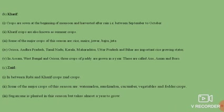Kharif crops are sown at the beginning of the monsoon and harvested after rain, that is between September to October. Kharif crops are also known as summer crops. Some of the major crops of this season are rice, maize, juar, bajra and jute. Orissa, Andhra Pradesh, Tamil Nadu, Kerala, Maharashtra, Uttar Pradesh and Bihar are important rice growing states.